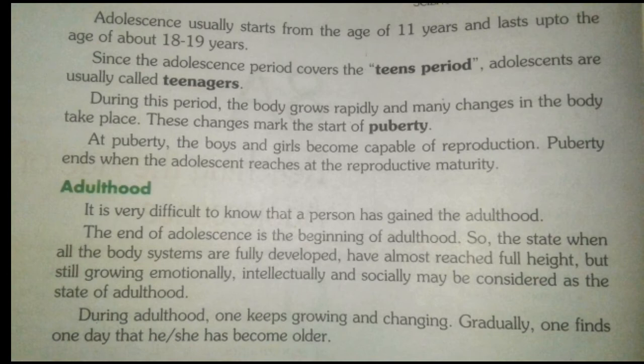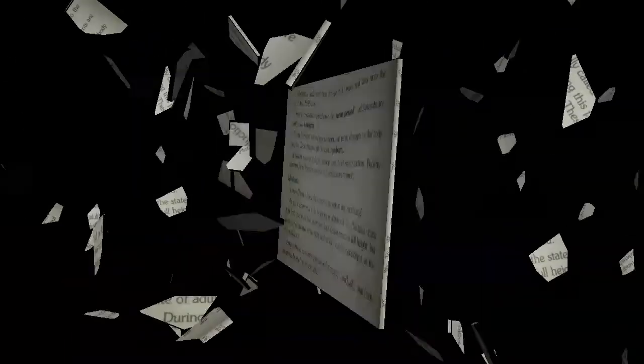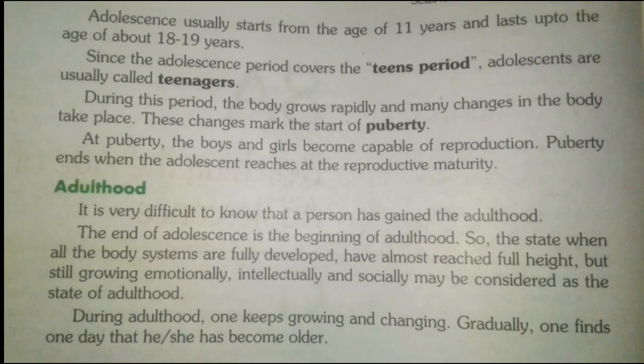During this period the body grows rapidly and many changes take place — these changes mark the start of puberty. At puberty, boys and girls become capable of reproduction. Puberty ends when adolescence reaches reproductive maturity. This is the age at which people start feeling the reproductive changes occurring in the body.